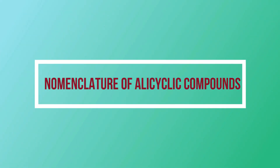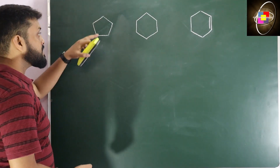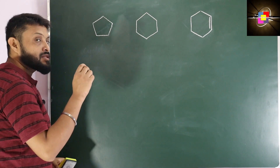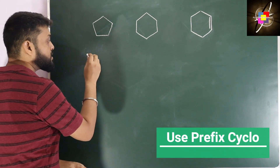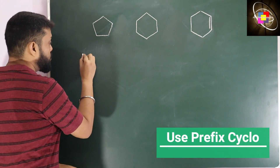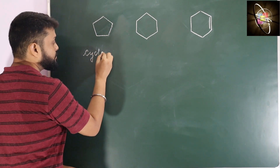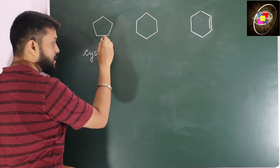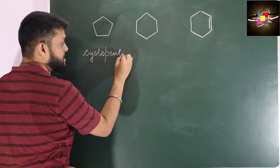Today we will discuss the nomenclature of alicyclic compounds. This is a 5-member ring. For cyclic compounds, we will start with 'cyclo.' Since it's a 5-member ring, we add pentane — so the name is cyclopentane.